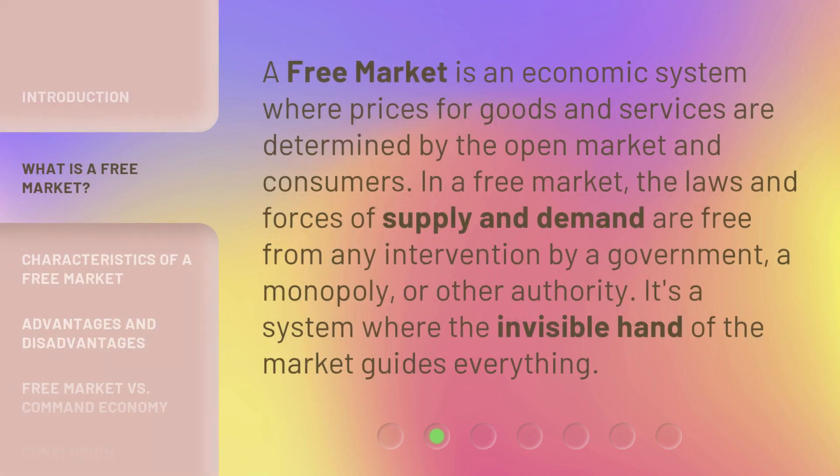A free market is an economic system where prices for goods and services are determined by the open market and consumers. In a free market, the laws and forces of supply and demand are free from any intervention by a government, a monopoly, or other authority. It's a system where the invisible hand of the market guides everything.